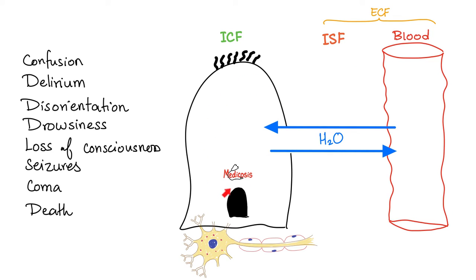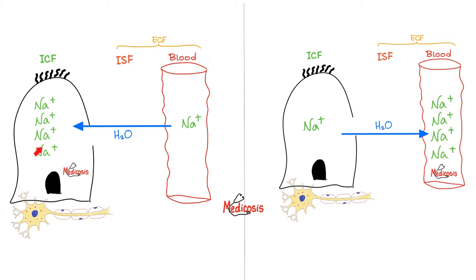Make believe this cell is in your brain. If my brain cell is swelling or shrinking, I am in bad shape. If my brain cell contains tons of sodium, water will flow to the cell and the cell will swell. But if the blood contains more sodium — hypernatremia — the fluid will go to the blood away from my brain cell and the brain cell will shrink. That's why with sodium problems you get CNS problems, whether you have hyponatremia or hypernatremia — both are bad for the brain.